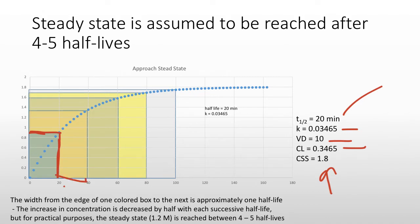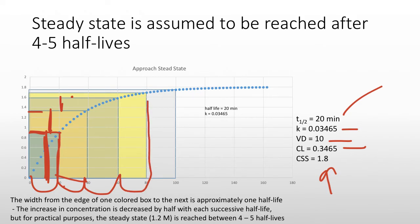At two half-lives, I get up to about 1.3. The amount my concentration changes goes down by half with each half-life. After four half-lives, I am almost at my steady state. After five half-lives, I am virtually there. As a rule of thumb, any time you've gone four to five half-lives, you have approached steady state.